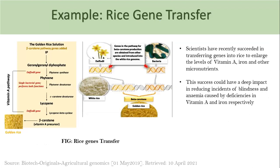Now we'll look at examples. First is rice gene transfer — a big breakthrough in plant genomics. Diseases like blindness occur due to vitamin A deficiency and anemia due to iron deficiency. To resolve these, bioinformaticians transferred certain genes into the beta-carotene production pathway in rice, greatly increasing the production of vitamin A and iron. This enhanced the quality of golden rice and overcame deficiencies of vitamin A and iron.